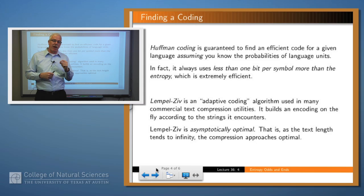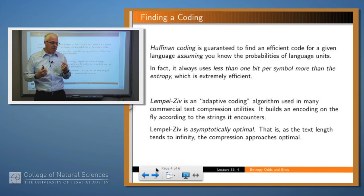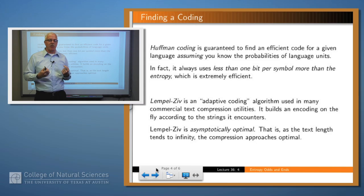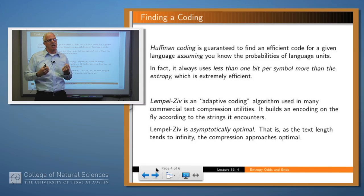So how do we find an encoding? We mentioned several times already that Huffman encoding gives you a pretty good encoding. In fact, if you know the probabilities of symbols in the language, Huffman encoding always uses less than one bit per symbol more than the entropy, which is very efficient. What that means is that if you use Huffman encoding, assuming you know the probabilities of symbols in the language, you'll never get a bad encoding.